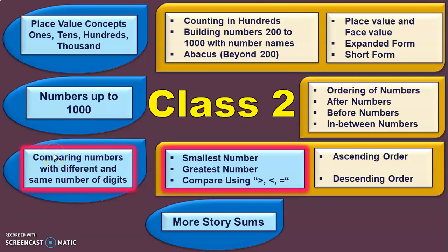Now let us see what we are going to cover in this video. Comparing numbers with different and same number of digits is the learning outcome, under which you will learn how to compare numbers using the symbols greater than, less than, and equal to, and also identify the smallest and greatest number in a given series. Ascending and descending order will be dealt with in a separate video.